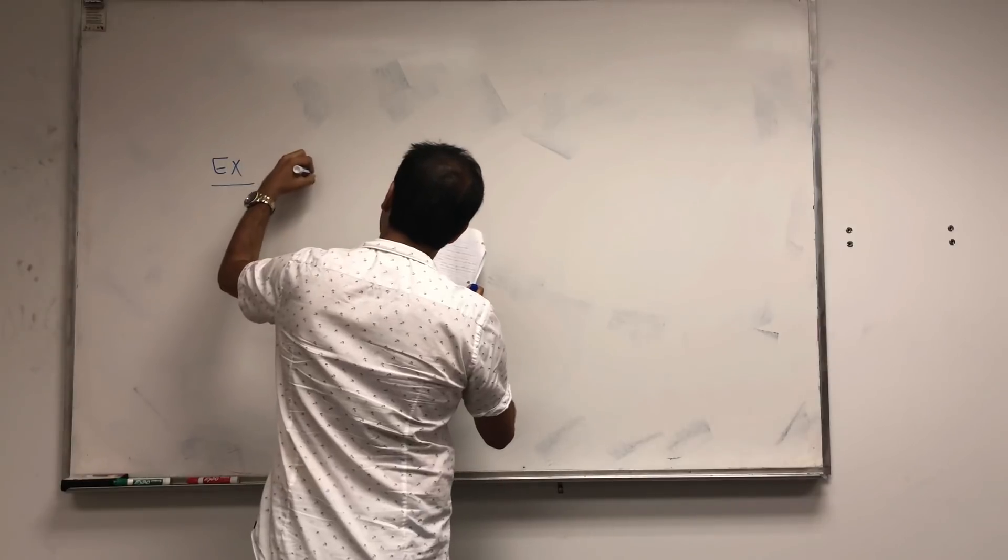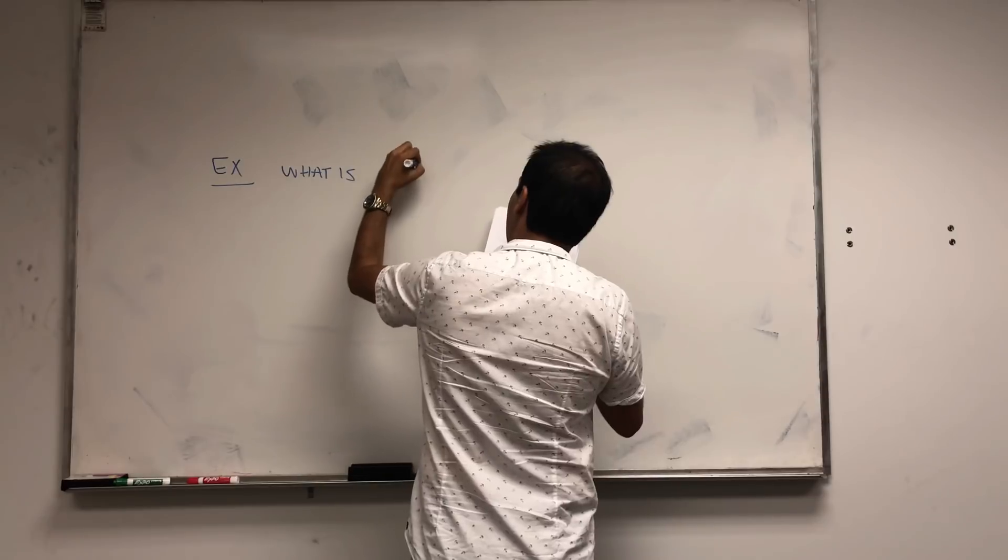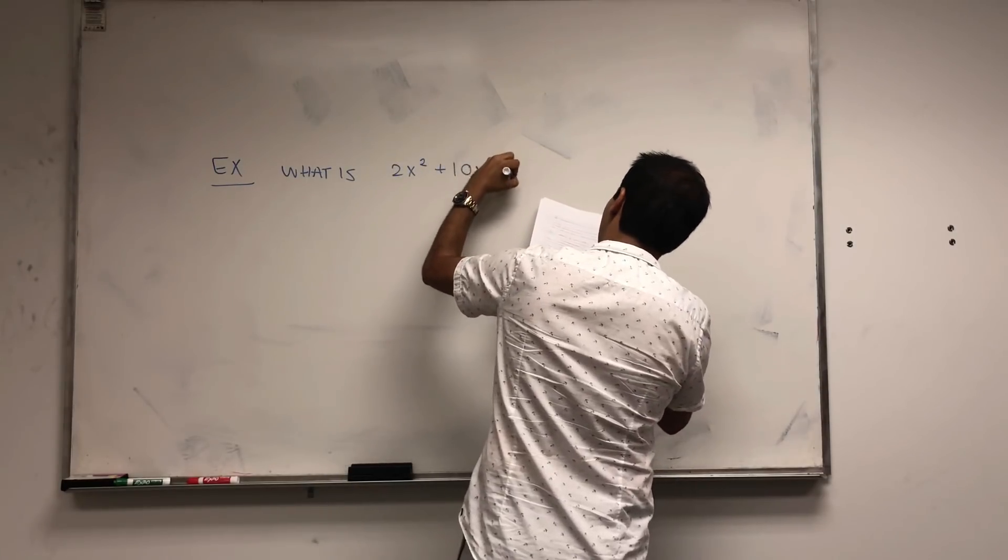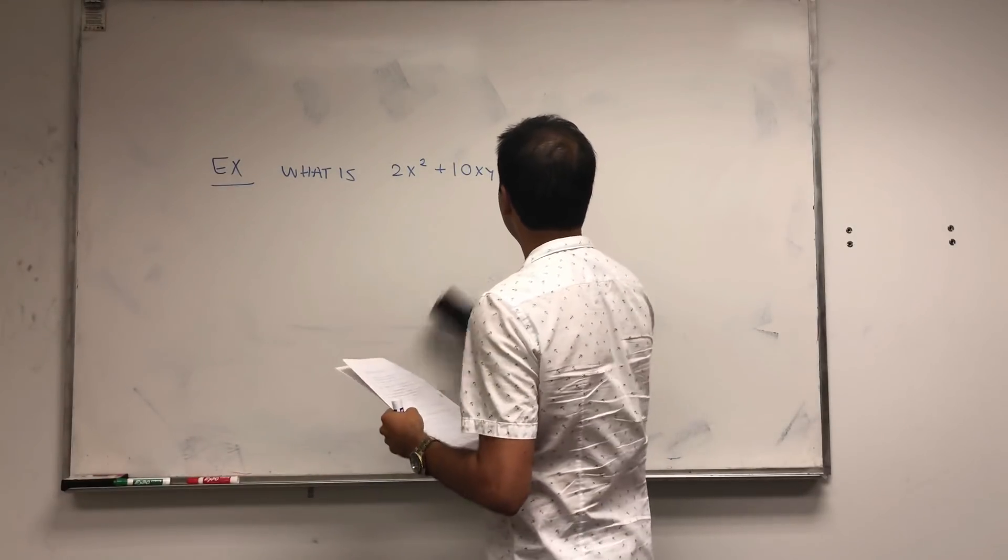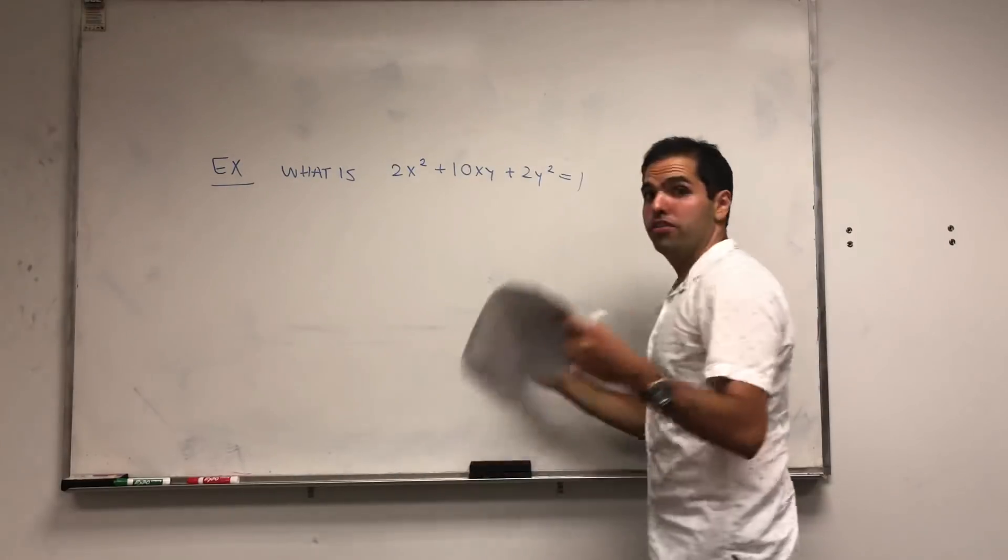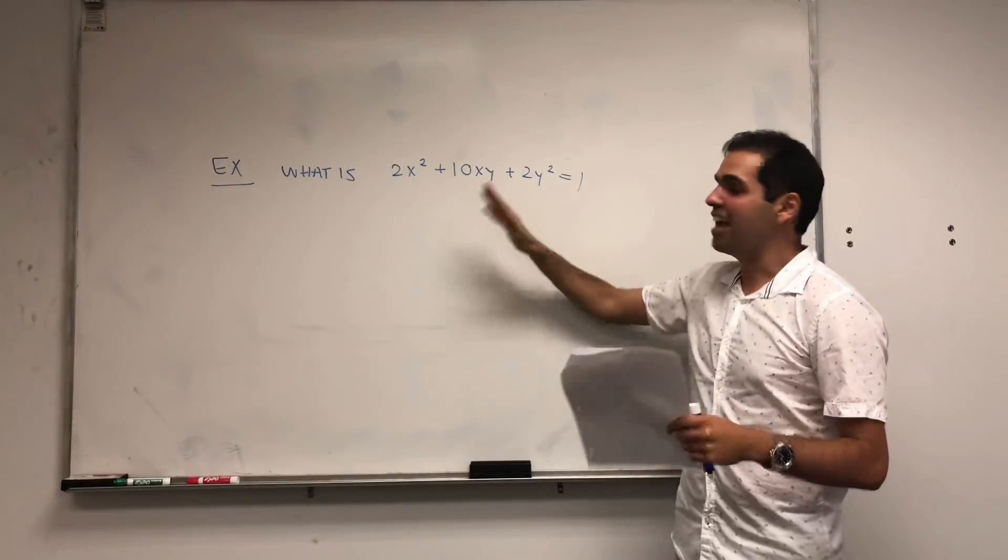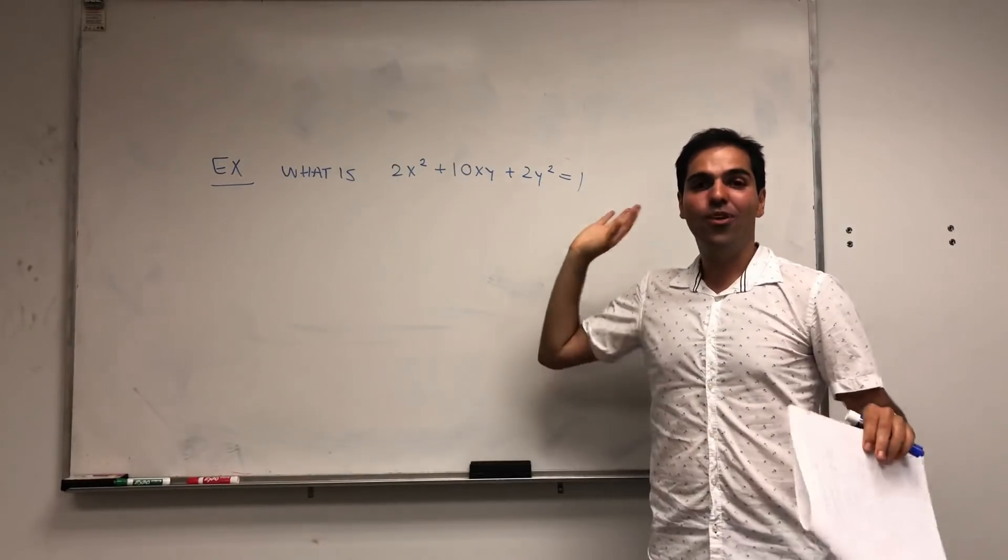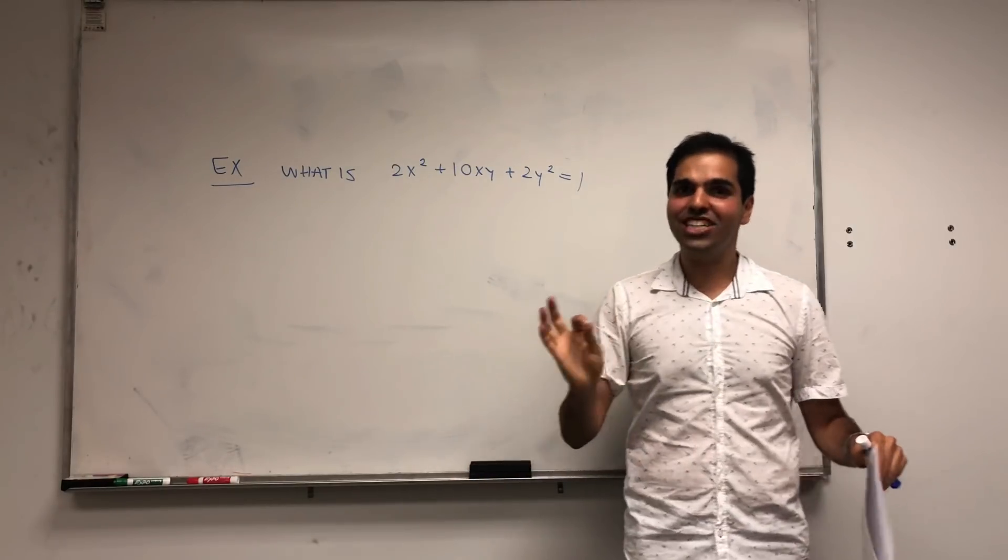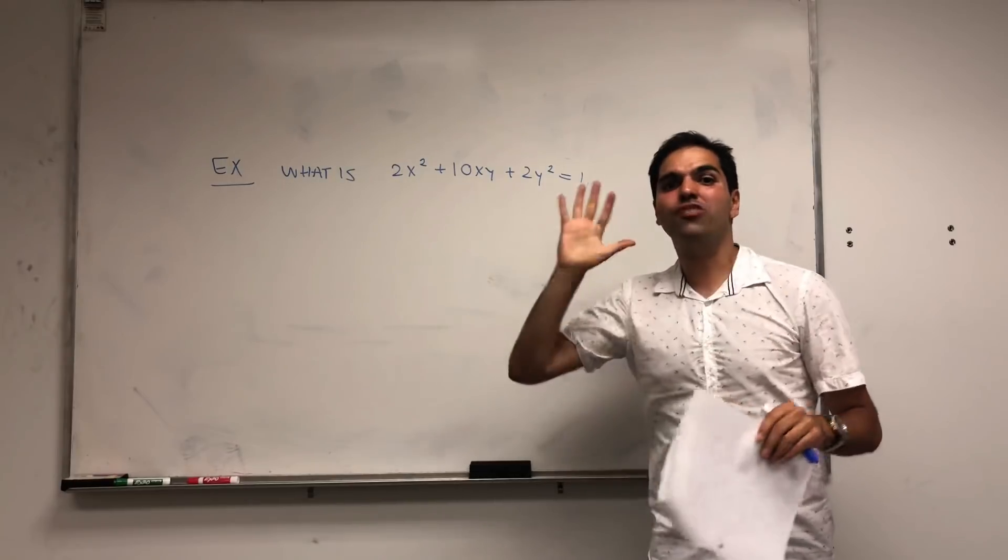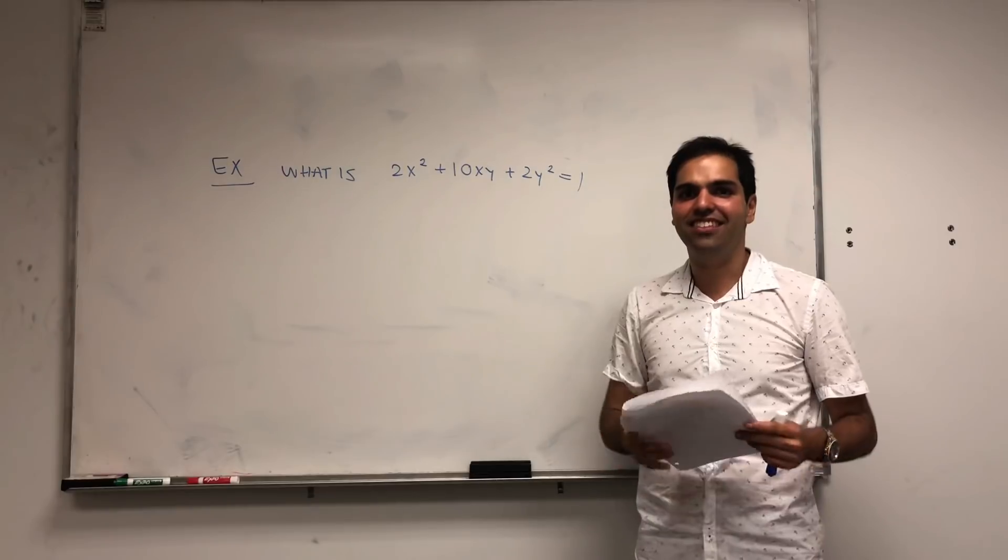So what is the curve or the surface 2X squared plus 10XY plus 2Y squared equals to 1? Apparently there's some formula like B squared minus 4AC or something that tells you exactly what this is, but we will do this the linear algebra way. And the advantage is, what I'm presenting now works for any dimensions. Even for 3D surfaces, we can easily classify them.